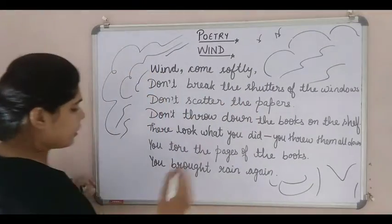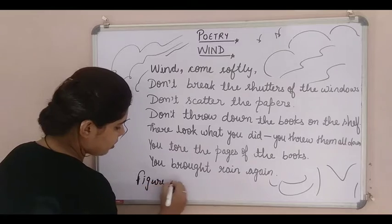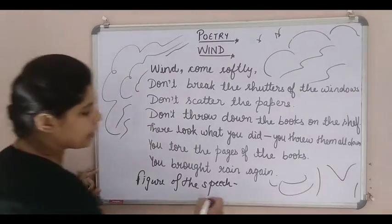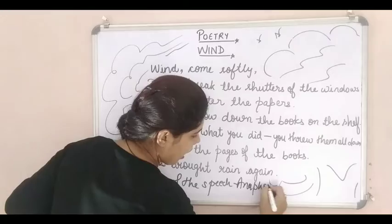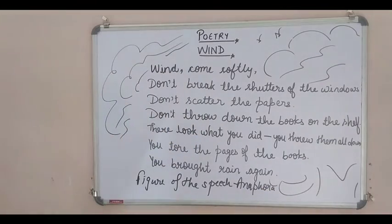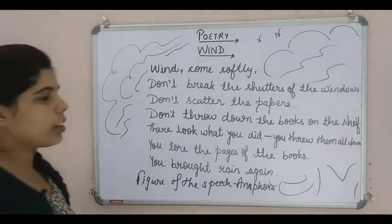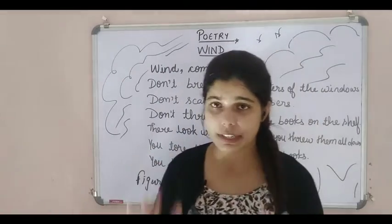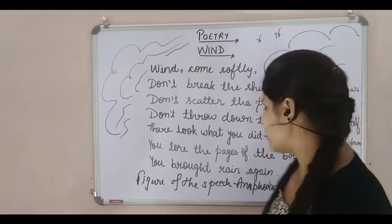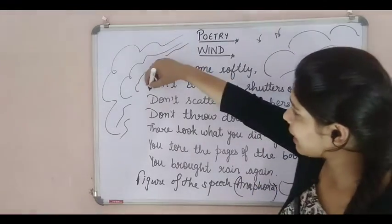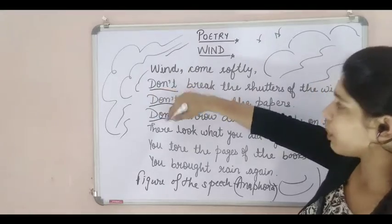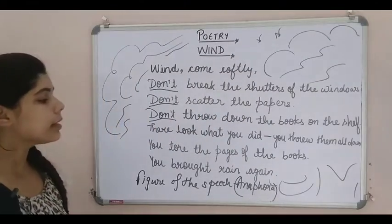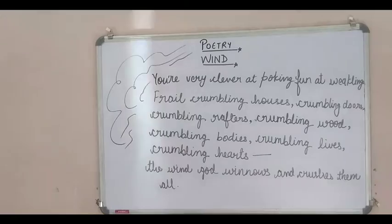One thing — the figure of speech of this stanza is anaphora. What is anaphora? Anaphora is when two or three consecutive lines start with the same word. Here we can see 'don't,' 'don't,' and 'don't' — these three consecutive lines are all starting with the same word. So the figure of speech used in the first stanza is anaphora.